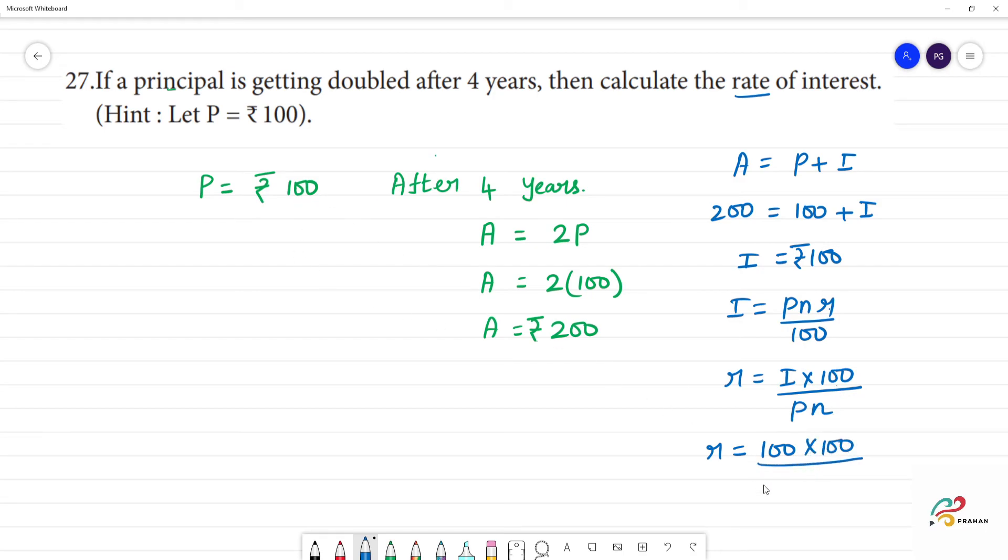Principal amount available 100 multiplied by n and the number of years is 4. 100 and 100 cancel, 2 fours are 8, 25. So r is equal to 25 percent.